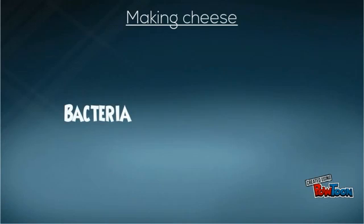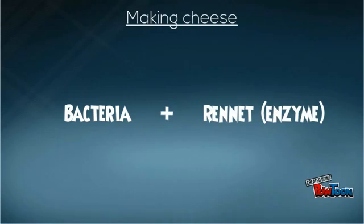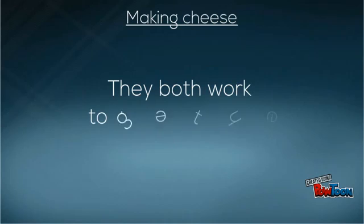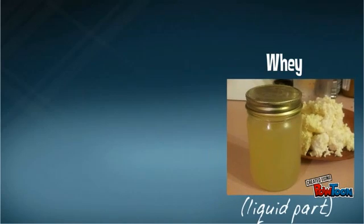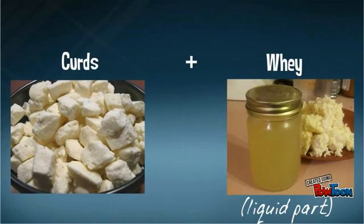When making cheese, bacteria are again added to milk along with the enzyme rennet. The enzyme acts with bacteria to clot the milk and make curds and whey. The whey is the liquid part which is drained off, and the curds are the solid bits which are then used to make cheese.